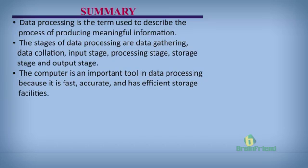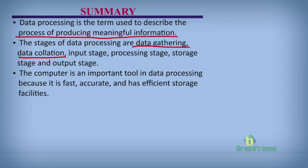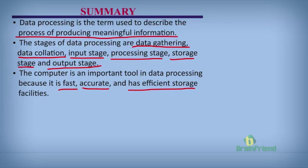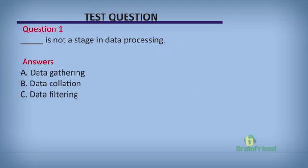Let's summarize all we've learned today. Data processing is a term used to describe the process of producing meaningful information. We looked at the stages of data processing: data gathering, data collation, the input stage, the processing stage, the storage stage, and the output stage. The computer is an important tool for data processing because it is fast, accurate, and has efficient storage facilities.